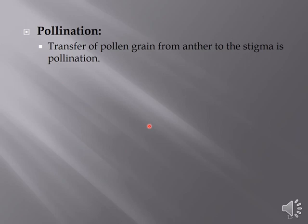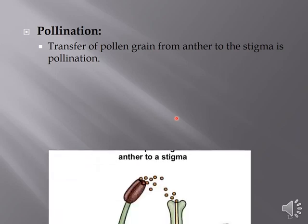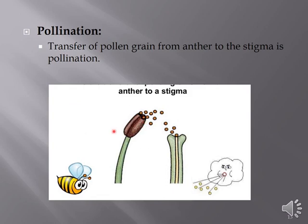Next we are going to discuss the process of pollination. Pollination refers to the transfer of pollen grains from the anther to the female part of the flower, that is the stigma. Here you can observe the transfer of pollen grains being shed from the anther and falling over the top of the stigma. This process is known as pollination and takes place by several means.